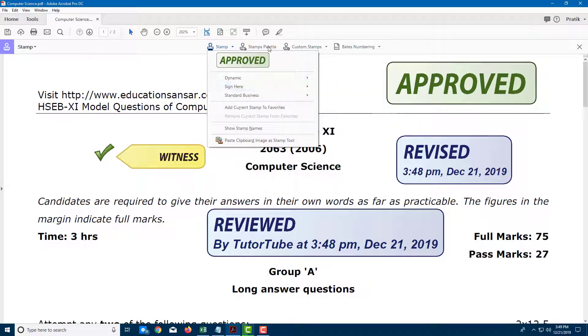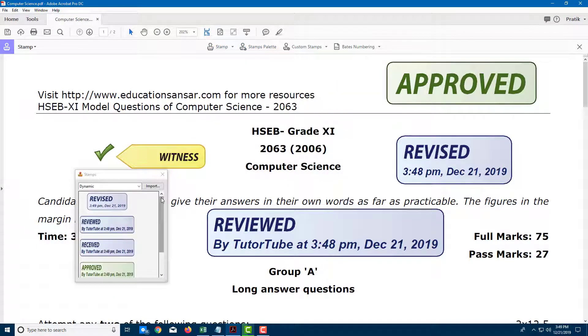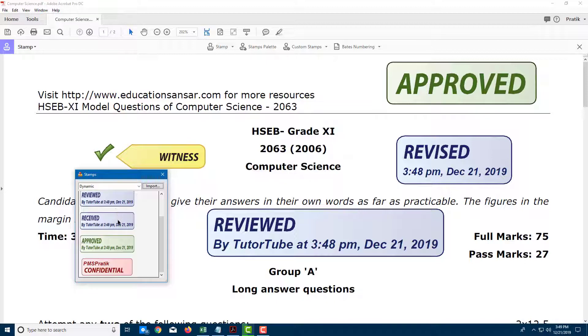Once you go to Stamp Palette, you can see there are a lot of palettes. These are some dynamic palettes which change according to the time and date. There's Sign Here stamps, Standard Business stamps, and Favorite stamps.